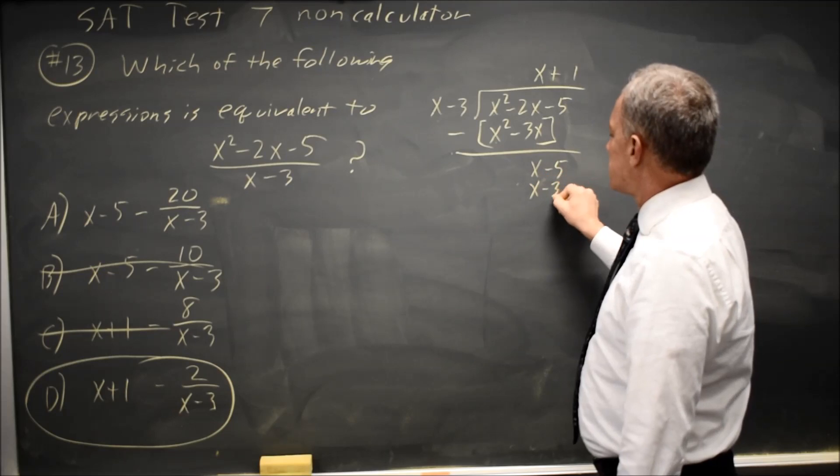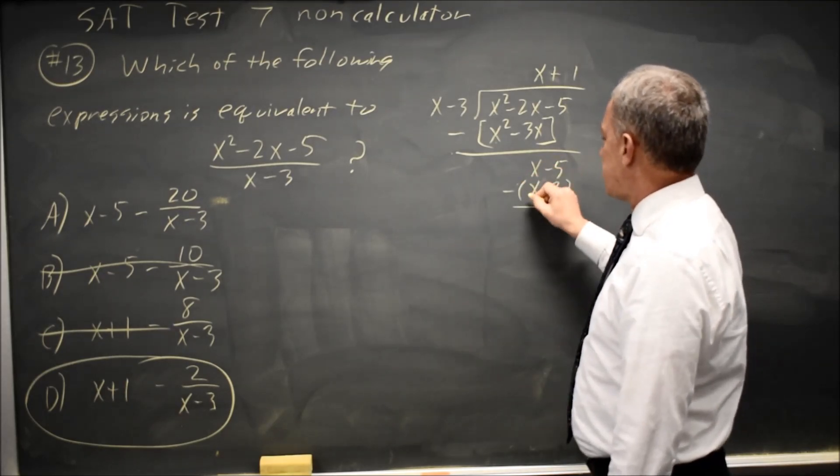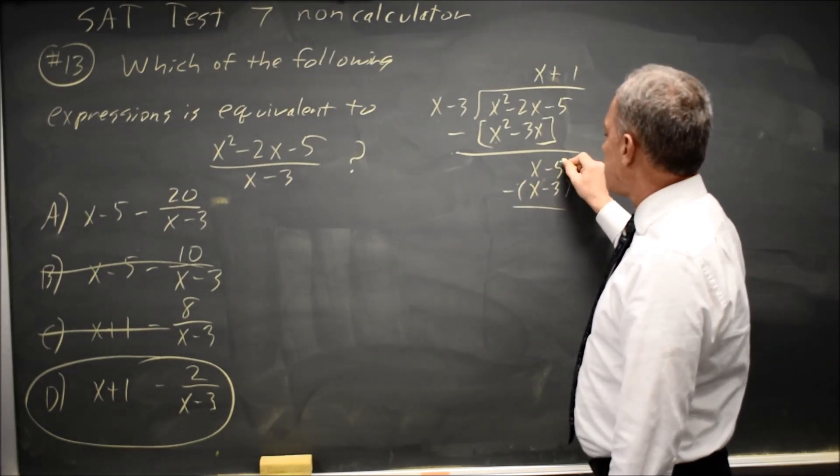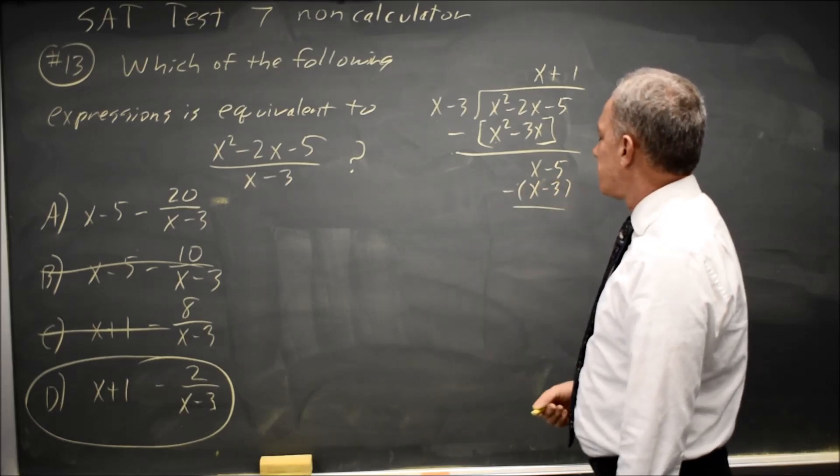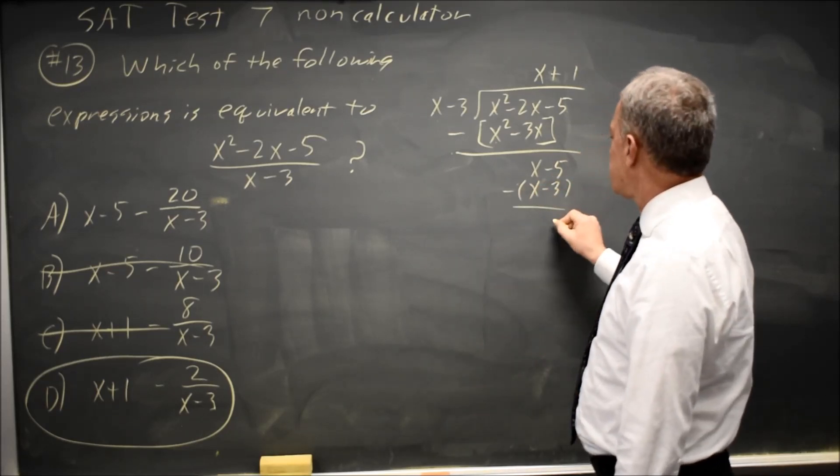x goes into x one time. So I get x minus 3. Subtract the whole expression. x minus x is 0. Negative 5 minus negative 3 is negative 5 plus 3 is negative 2.